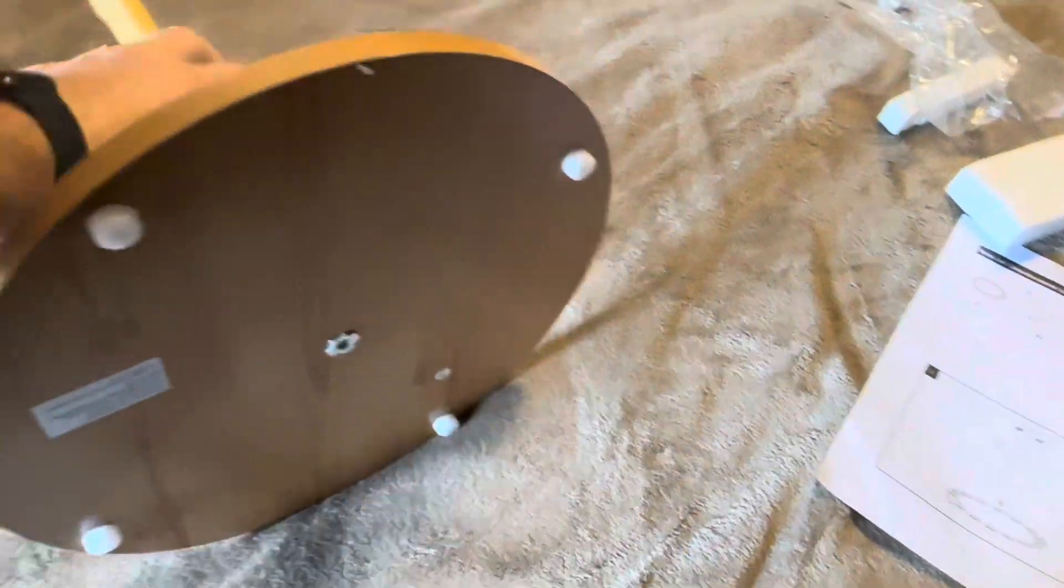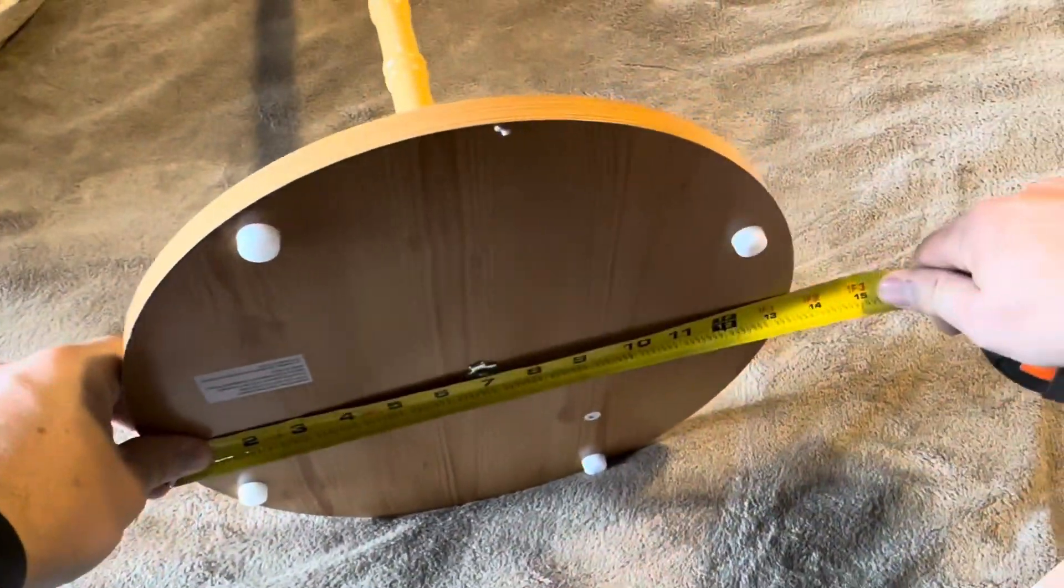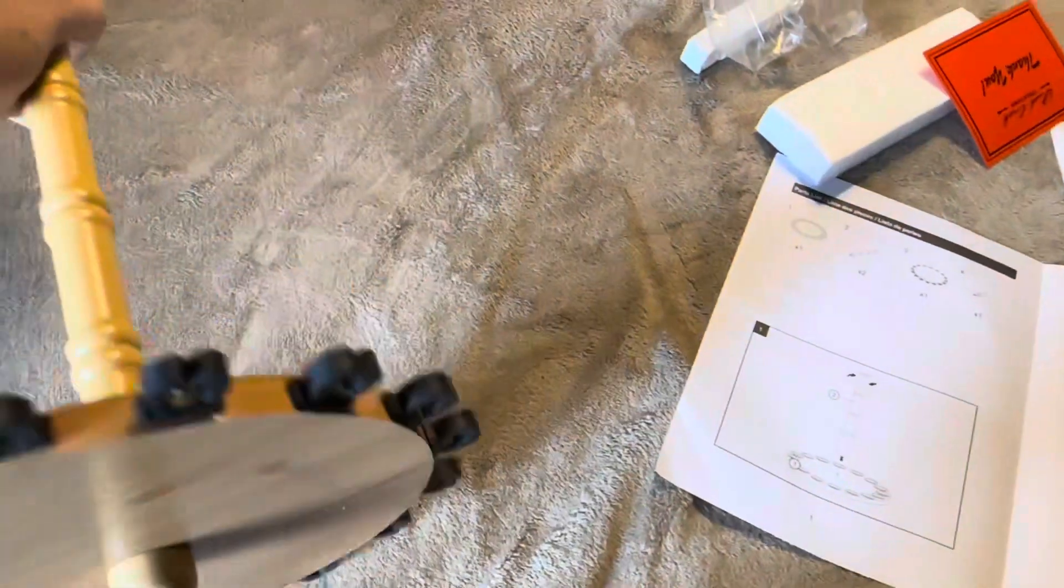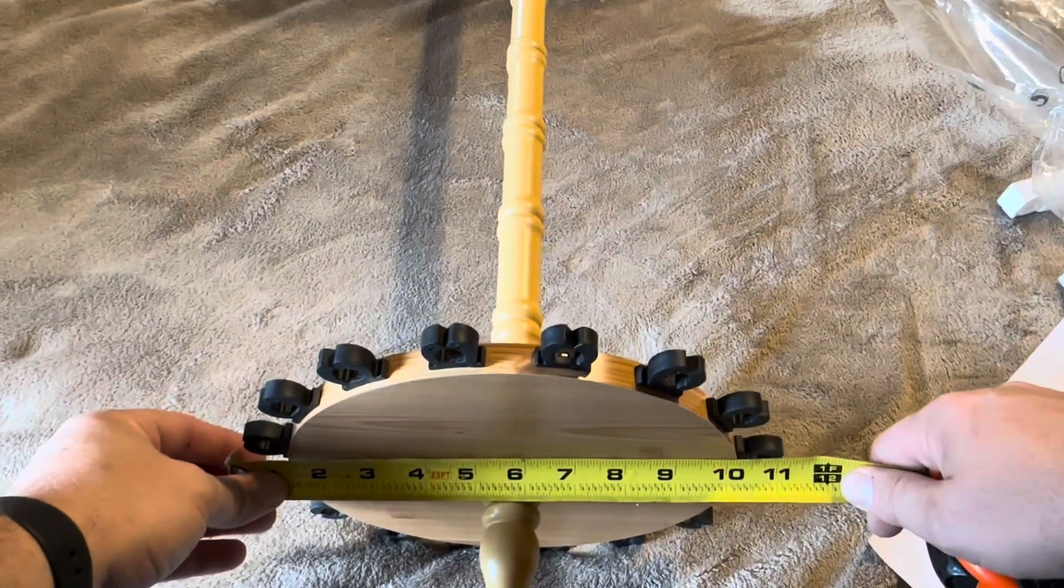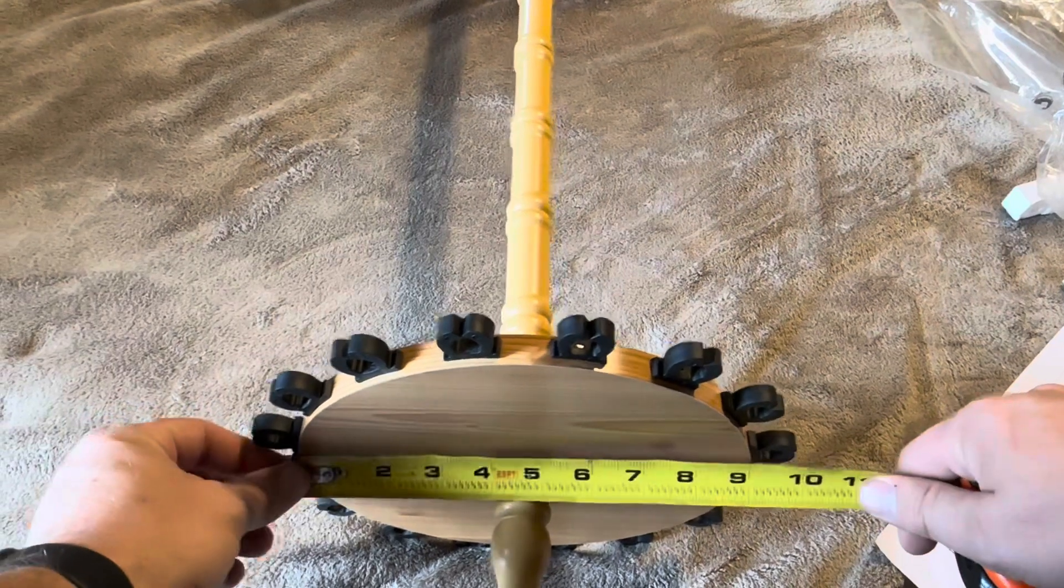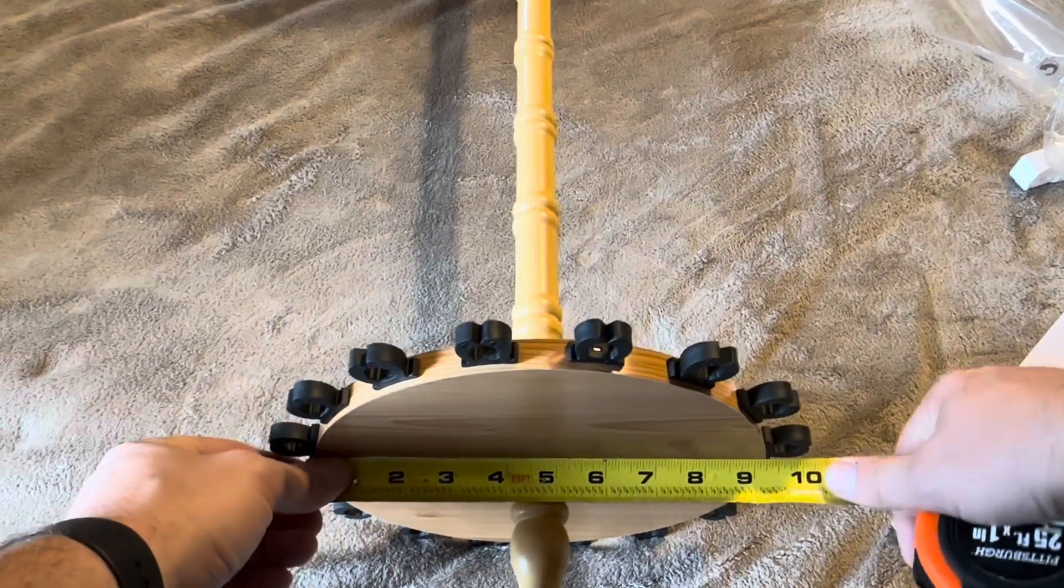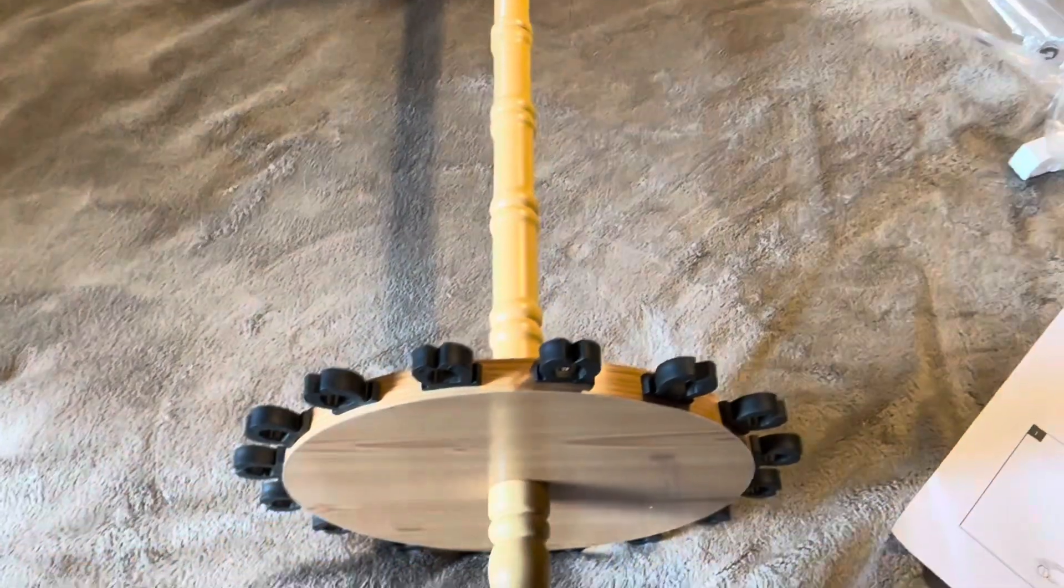Now the size of the base itself across is going to be about 13 and a half and then across on the smaller portion here if you're just including those black parts it's going to be a little over 11, about 11 and a quarter. If you just include the wood it's going to be about nine and a half or so.